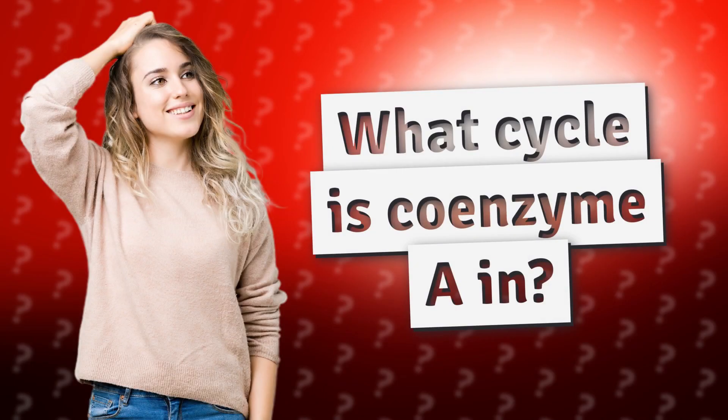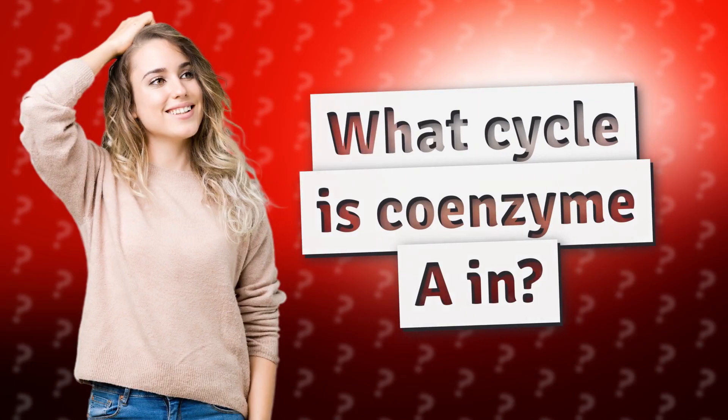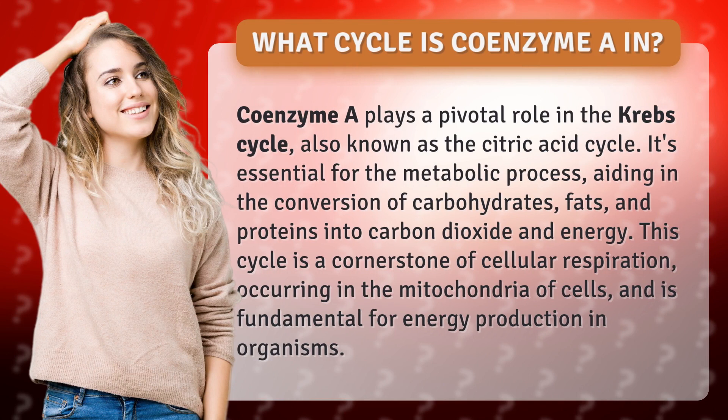What cycle is coenzyme A in? Coenzyme A plays a pivotal role in the Krebs cycle, also known as the citric acid cycle. It's essential for the metabolic process, aiding in the conversion of carbohydrates, fats, and proteins into carbon dioxide and energy. This cycle is a cornerstone of cellular respiration, occurring in the mitochondria of cells, and is fundamental for energy production in organisms.